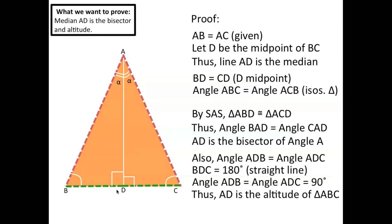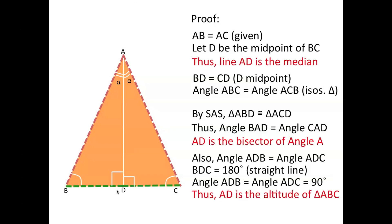Thus, in an isosceles triangle, the median, the bisector, and the altitude all lie on the same line.